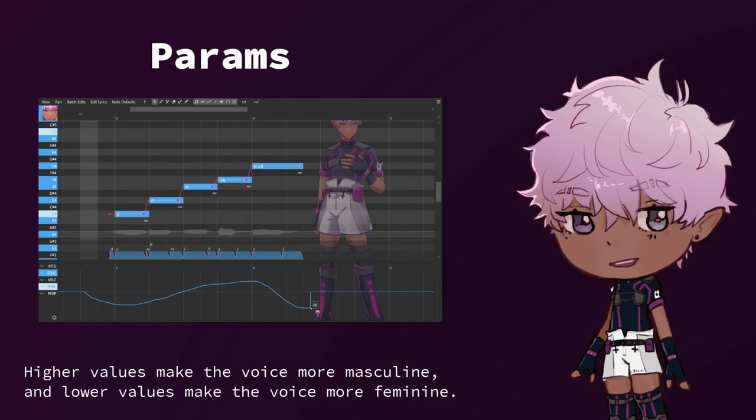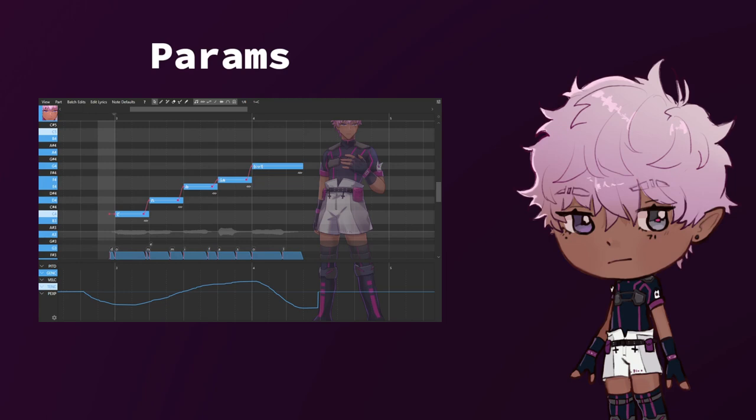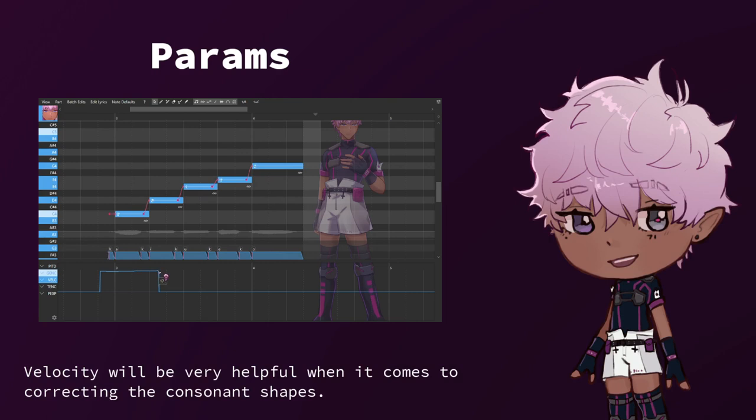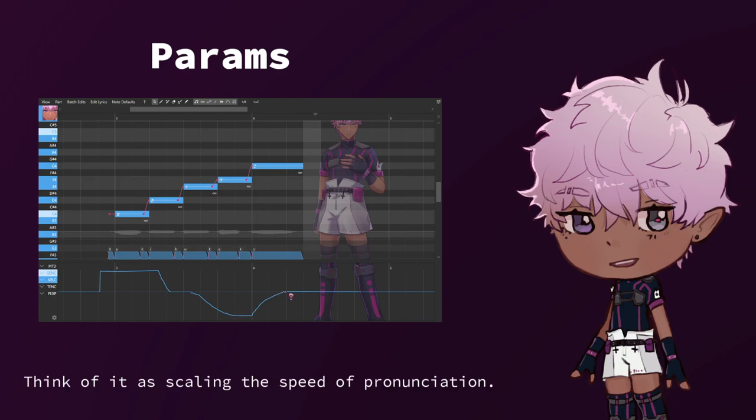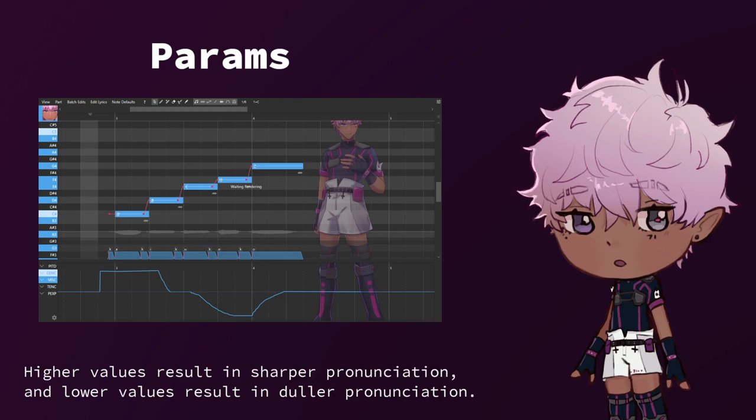Intuitively, the gender parameter shifts the character of the voice. Higher values make the voice more masculine, and lower values make the voice more feminine. Velocity will be very helpful when it comes to correcting consonant shapes — think of it as scaling the speed of pronunciation. Higher values result in sharper pronunciation, and lower values result in duller pronunciation.